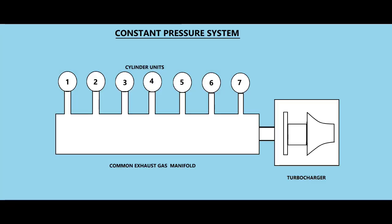In the constant pressure system, exhaust gas from all cylinders is discharged into a common manifold of large volume. The exhaust gas is maintained at a steady pressure rather than intermittent, leading to greater efficiency at high loads. Auxiliary electrically driven blowers are used to supply air for low load conditions. Because there is no need to supply a pulse of exhaust gas, the exhaust valve can be timed to open later in the engine cycle, resulting in a longer power stroke, giving good engine performance at high loads. No exhaust pipe grouping is required.